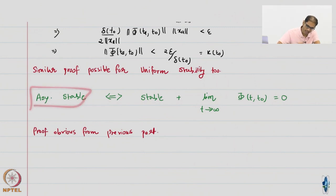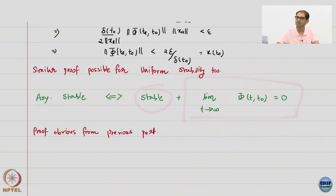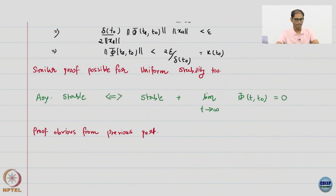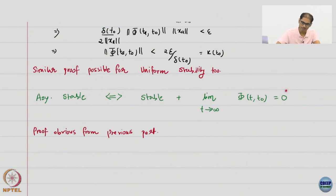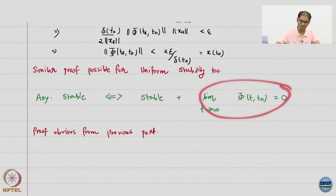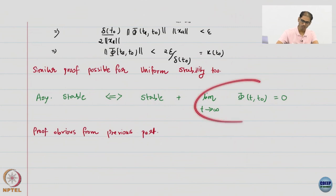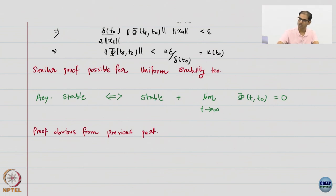For linear systems, asymptotic stability is actually equal to stability plus this sort of convergence. Attractivity means that as time increases, the state transition matrix goes to 0. Therefore, whatever the initial condition is, solutions will converge to 0 — this is global attractivity. The initial condition is irrelevant, it is just some scaling constant, and everything goes to 0.